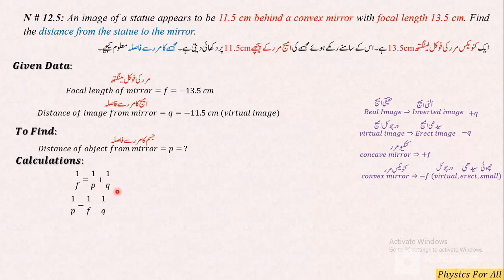To 1 over p, 1 over f mein se minus hoga. In ki values put kar dein: f ki value hai 13.5 aur yeh minus yahan pe upar aa gaya. Is tarah se q ki value hai 11.5. Ek yeh minus hai aur ek yeh minus hai, to yeh minus into minus plus ho gayi.